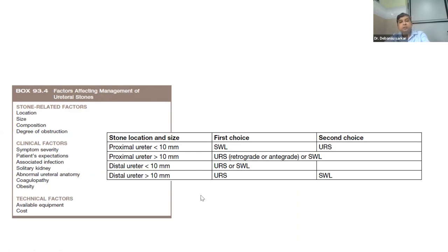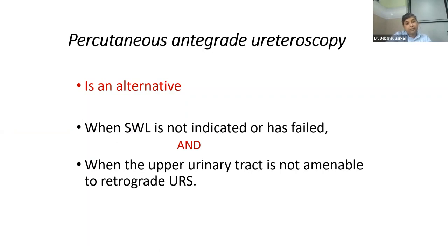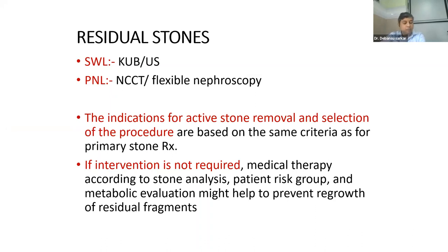For bladder stones, always look for the cause. In pediatric patients — always investigate why the patient formed a bladder stone. In adult patients with a bladder stone, think about whether it is a migrated stone from the kidney or formed in the bladder, as management changes. Residual stones after treatment should be re-evaluated by USG or CT, and treated by SWL or RIRS depending on their size and location.